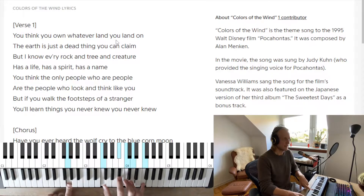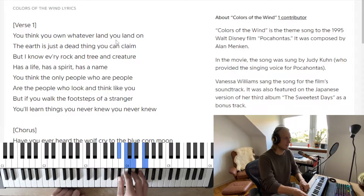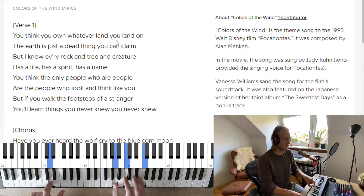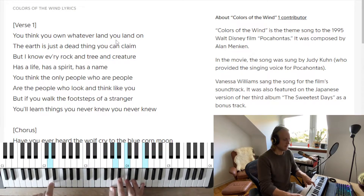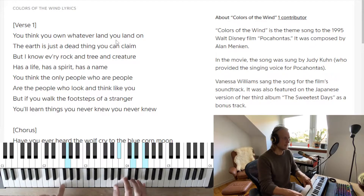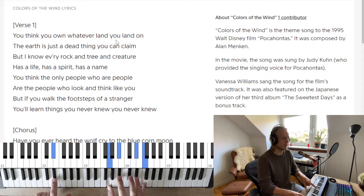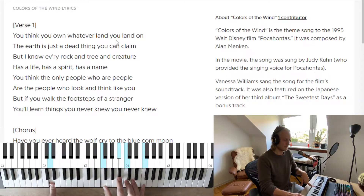Right hand alone: 'I think you own whatever land you land on, the earth is just a dead thing you can claim' — F and back to B flat. 'But I know every' — F — 'rock and tree' — E flat — 'creature' — B flat over D.